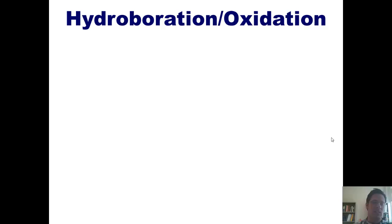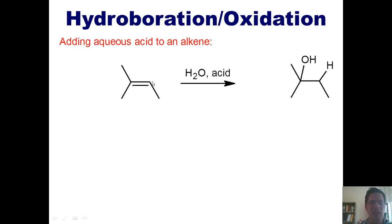Our next reaction is hydroboration oxidation. You might remember from earlier in this lecture that if you take an alkene and stir it with water in the presence of catalytic acid, you'll end up placing an OH on the more substituted carbon, that is, the internal one. The reason for that is because it traverses an intermediate that has a more stable carbocation, according to Markovnikov's rule.